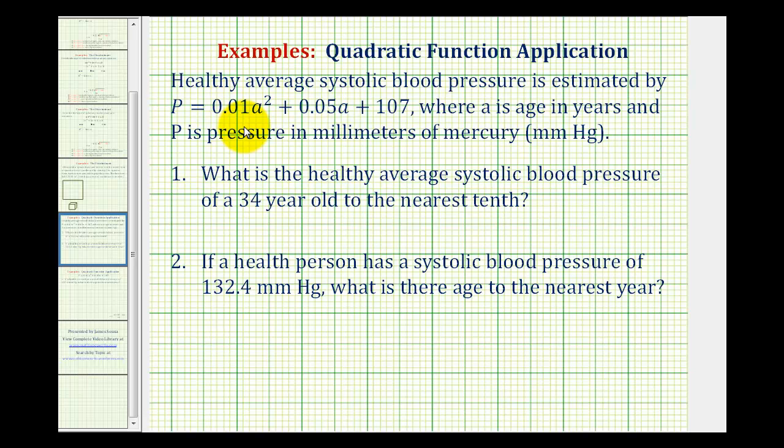Healthy average systolic blood pressure is estimated by P equals 0.01A squared plus 0.05A plus 107, where A is the age in years and P is the pressure in millimeters of mercury.